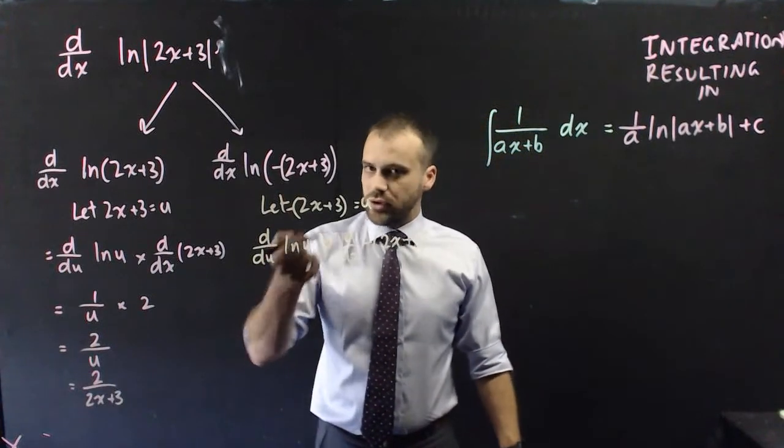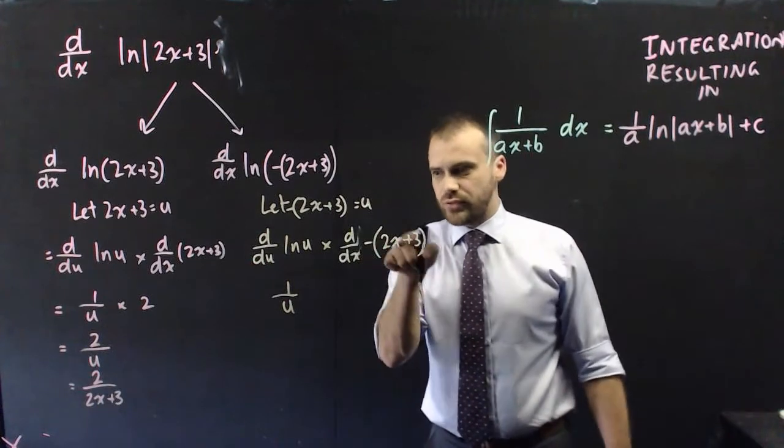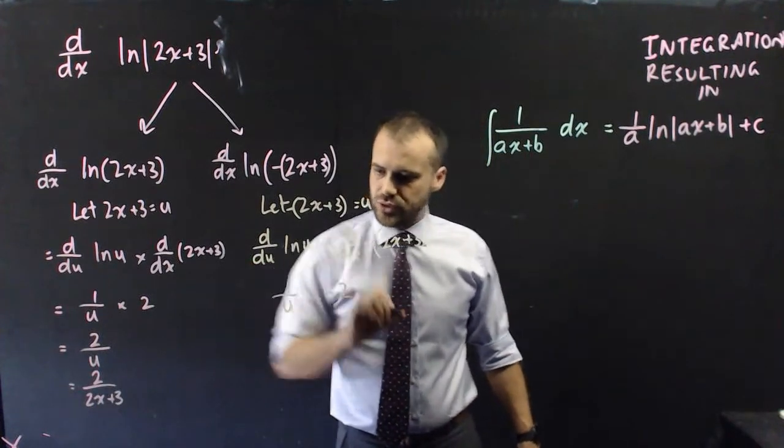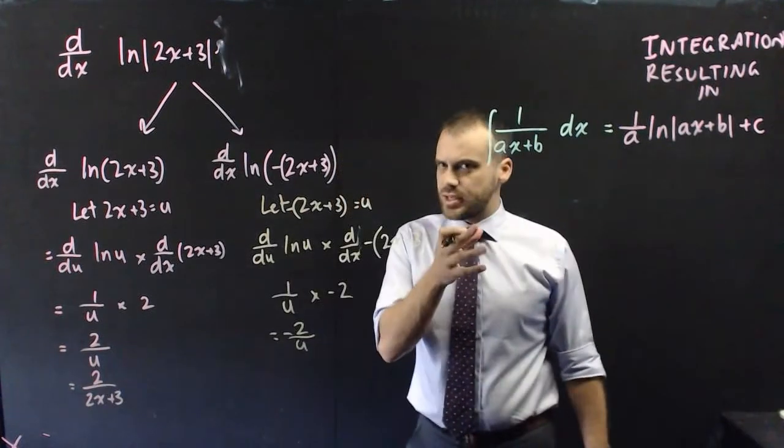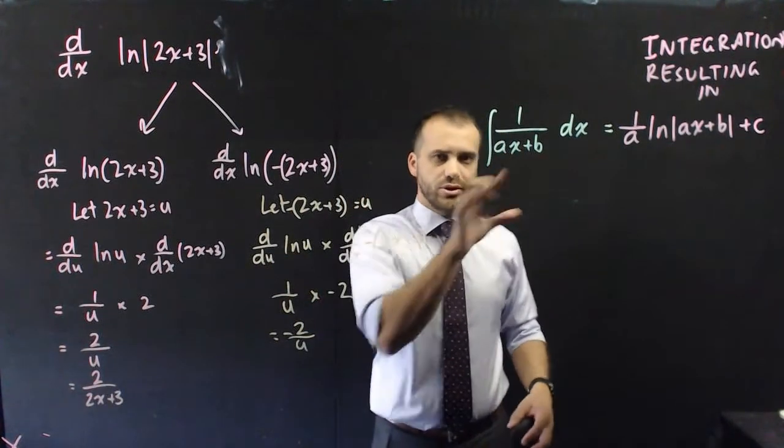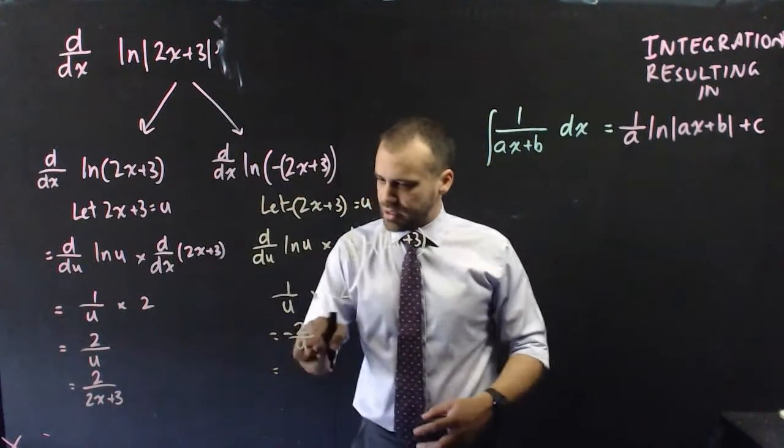Now, once we've done that, we can see the only difference here is a negative 2x plus 3. The derivative of ln u is 1 on u. So far, so good. The derivative of that is negative 2. And you might be thinking, I'm heading towards a different answer here. This is a problem because it's supposed to work for both cases.